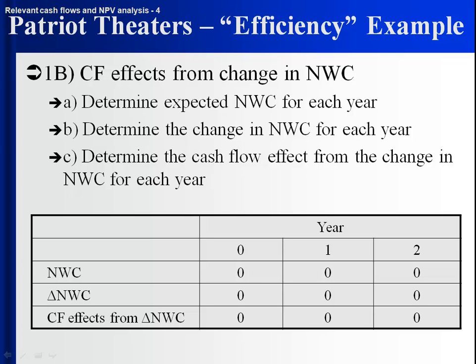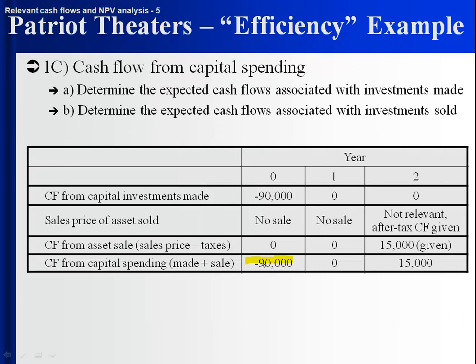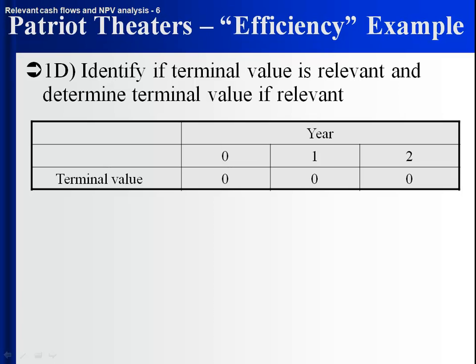There's no net working capital, so we put it in there for completeness but it's all zero. For capital spending: you're spending $90,000 on the equipment in year zero, and you're selling it for an after-tax cash flow of $15,000 in year two — so there's something in year zero and year two, but nothing in year one. There are no terminal values associated with this project; it's a two-year project and you're analyzing all two years.